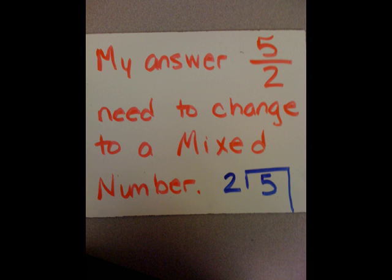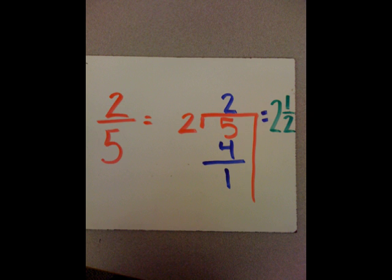My answer, 5 over 2, needs to change to a mixed number. So, I have to divide 2 into 5 and see how many times it will go. 5 divided by 2 goes 2 times, which 2 times 2 is 4, with 1 left over.